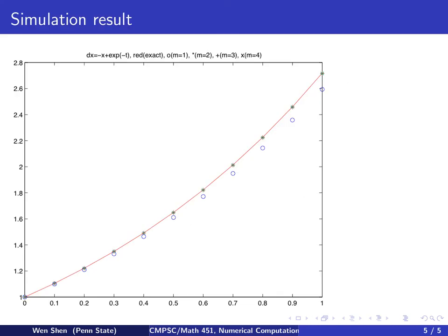So here is the numerical simulation result for this method with the four different M values, and here we plot it together with the exact solution. So the exact solution is the red curve, and the blue circles are the first order method, and the star is the second order method, and the plus is the third order method, and the cross is the fourth order method. We see that, except for the first order method, all the other methods are very close to the exact solution, and it's a bit hard to see by eyes which one is giving a better approximation. One would need to actually plot the error out on its own to see that.